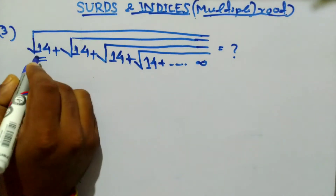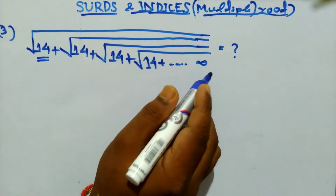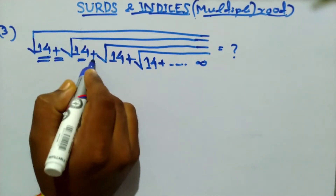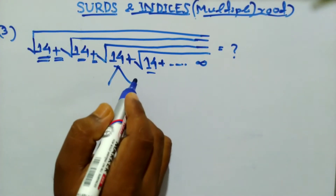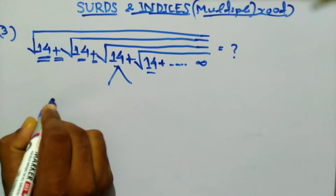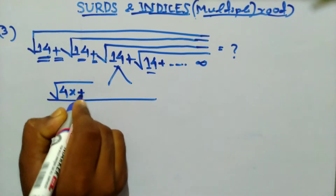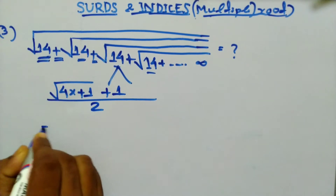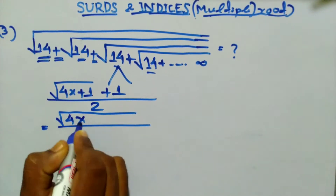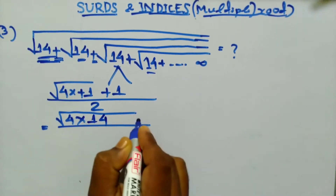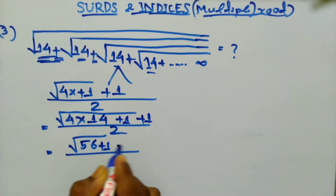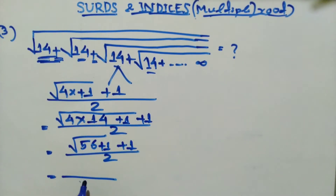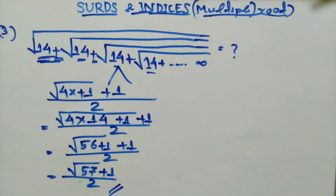Next question: root 14 plus root 14, up to infinity. All the numbers and signs are the same, but 14 cannot be written as consecutive terms. When you cannot write it as consecutive terms, apply the formula: (√(4x + 1) + 1) / 2. Here 4 into x is 14, so it becomes (√(56 + 1) + 1) / 2 = (√57 + 1) / 2. This is the answer.